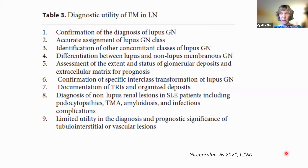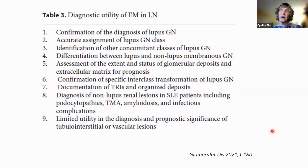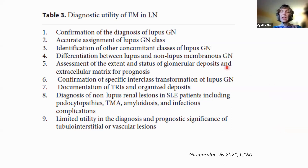Here's an example from an article in Glomerular Diseases — a new journal I'll mention at the end of the talk — on lupus nephritis. As you can see from this table, EM may confirm a diagnosis of lupus or help with accurate assessment of the class of lupus nephritis, can identify additional classes or differentiate between lupus and non-lupus membranous, and can provide the status and extent of glomerular deposits offering potentially prognostic information. EM really can provide important information in addition to light microscopy and immunofluorescence.